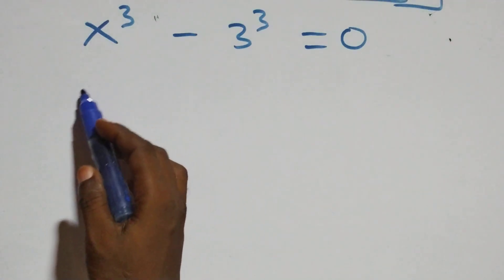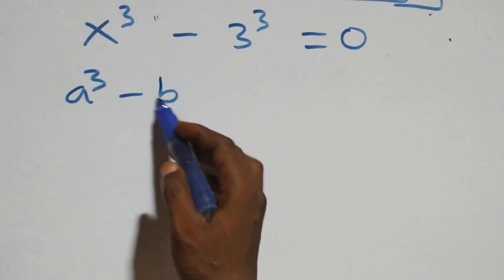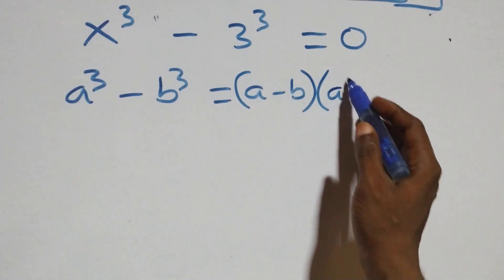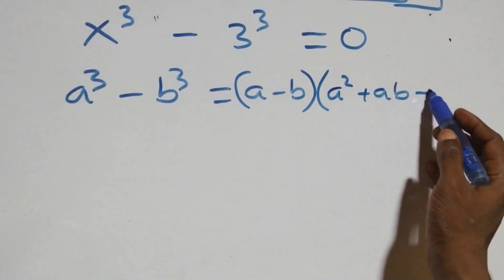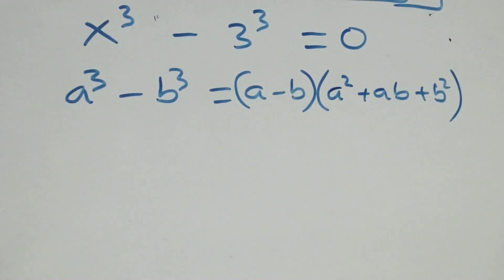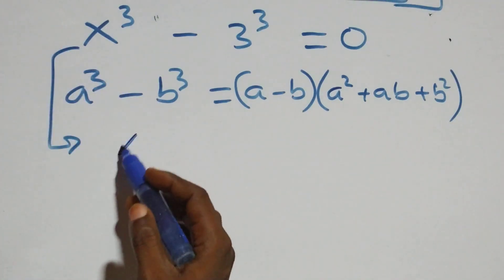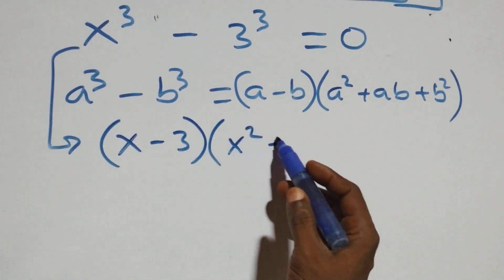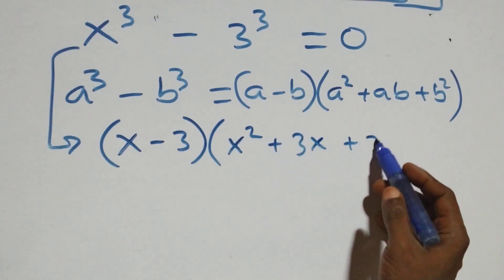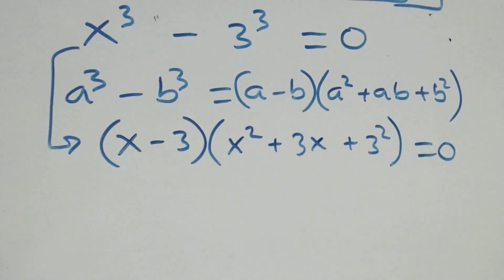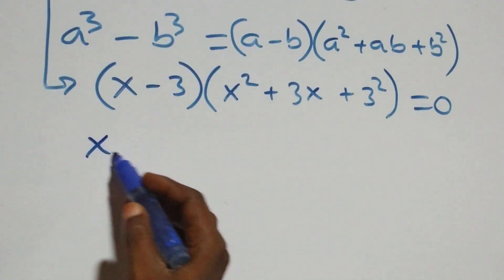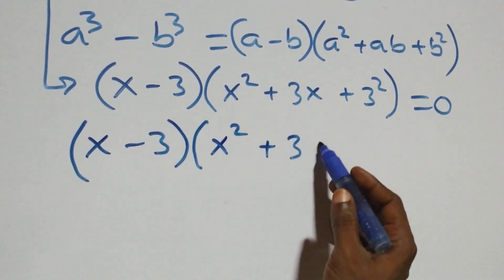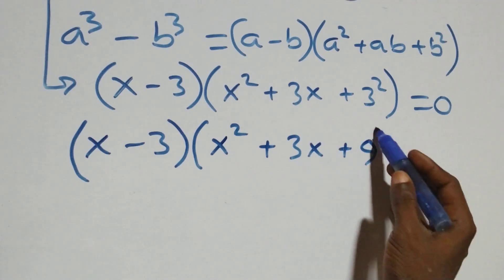Solving from the second case: this follows the difference of cubes identity — a raised to power 3 minus b raised to power 3 equals a minus b, times a squared plus ab plus b squared. Applying this, we get x minus 3 in brackets, times x squared plus 3x plus 9, in brackets, equals 0.